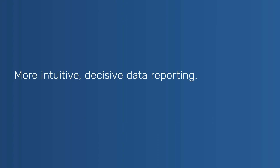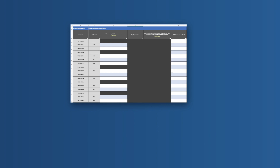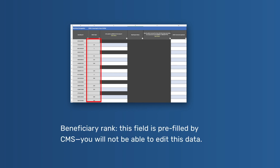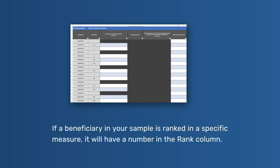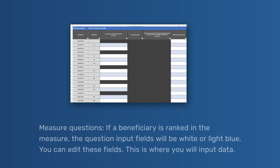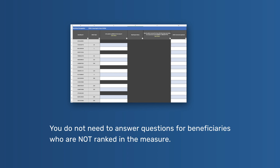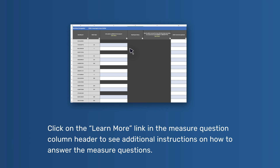Measure questions — more intuitive, decisive data reporting. As you scan your Excel template, you'll notice each measure header contains the following information underneath. Beneficiary rank: this field is pre-filled by CMS and you will not be able to edit this data. If a beneficiary in your sample is ranked in a specific measure, it will have a number in the rank column. Note that beneficiaries may not be ranked in all measures. If a beneficiary is ranked in the measure, the question input fields will be white or light blue — you can edit these fields and input data. If a beneficiary is not ranked in that measure, the fields will be dark gray and you do not need to enter data. Click on the Learn More link in the measure question column header to see additional instructions on how to answer the measure questions.